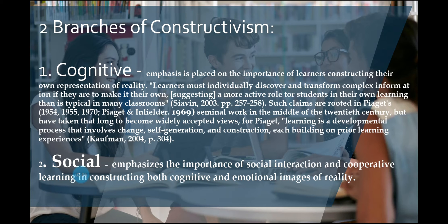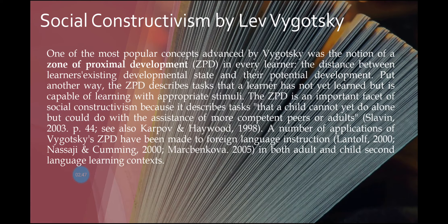The second branch is social constructivism. It emphasizes the importance of social interaction and cooperative learning in constructing both cognitive and emotional images of reality. Constructivism is a school of thought that emphasizes both the learner's role in constructing meaning out of available linguistic input and the importance of social interaction in creating a new linguistic system. Early constructivists like Vygotsky and Piaget actively emphasized their views many decades ago.